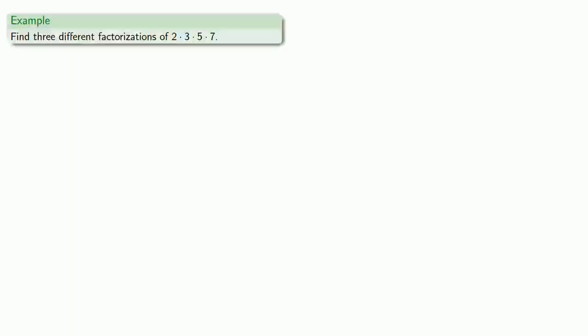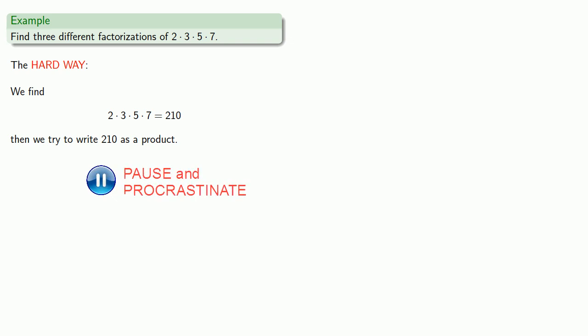So for example, let's find three different factorizations of the number 2 times 3 times 5 times 7. We'll do this the hard way first. First we find 2 times 3 times 5 times 7. That's 210, and then we try to write 210 as a product.